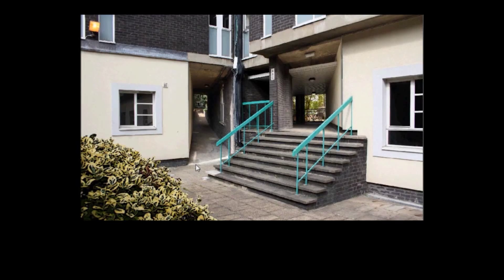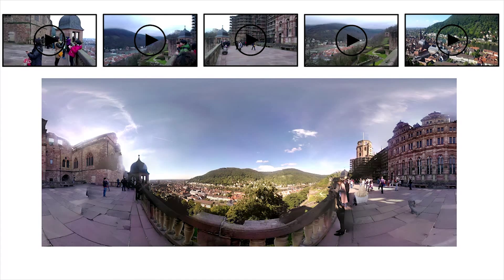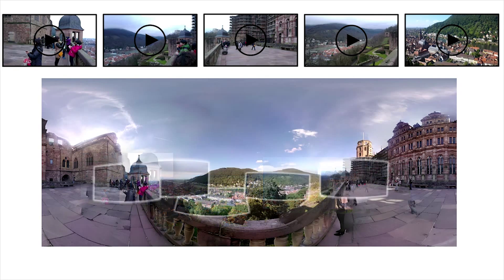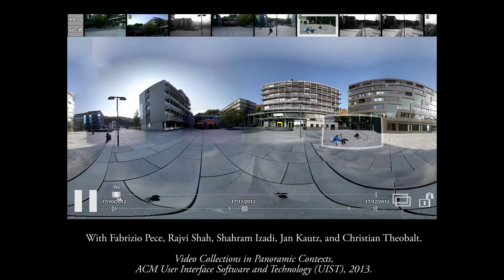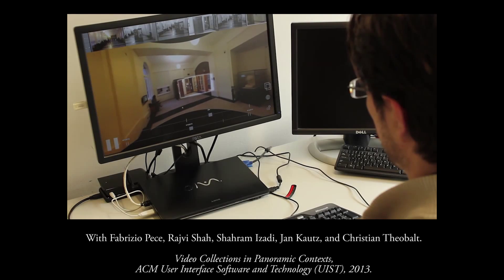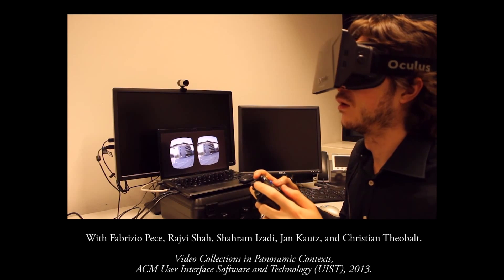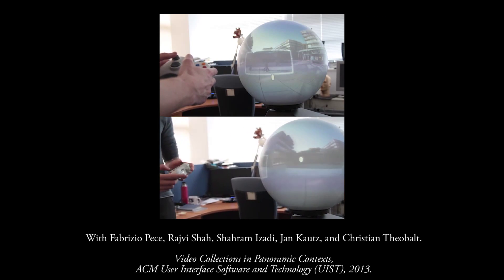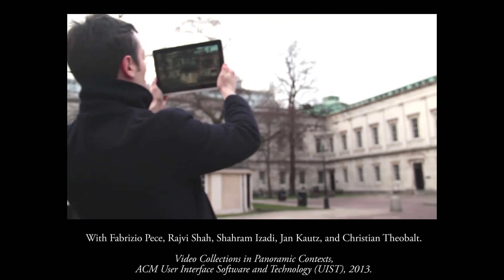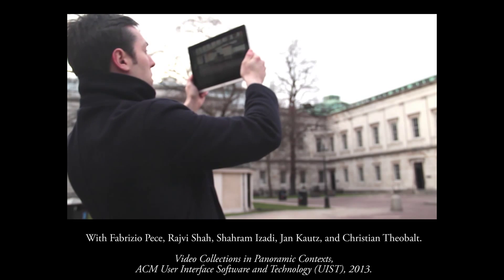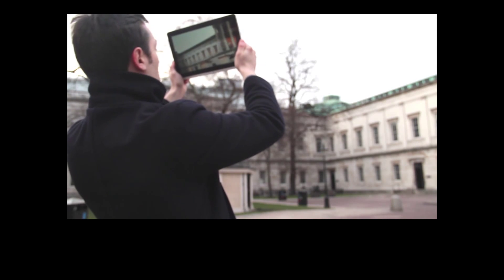To provide spatial context for multiple videos, we can embed smartphone videos into panoramic imagery to compare events over time. Now instead of panning and zooming, we see the video inlay move over the panorama. This flexible system can be used on desktops, head-mounted displays, or on spherical displays. We can even take a tablet out into the real world and use it like a time machine window to compare to events which occurred in the past.